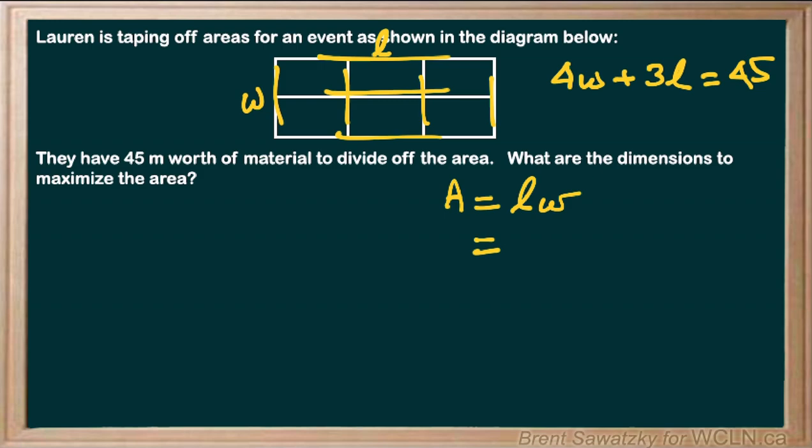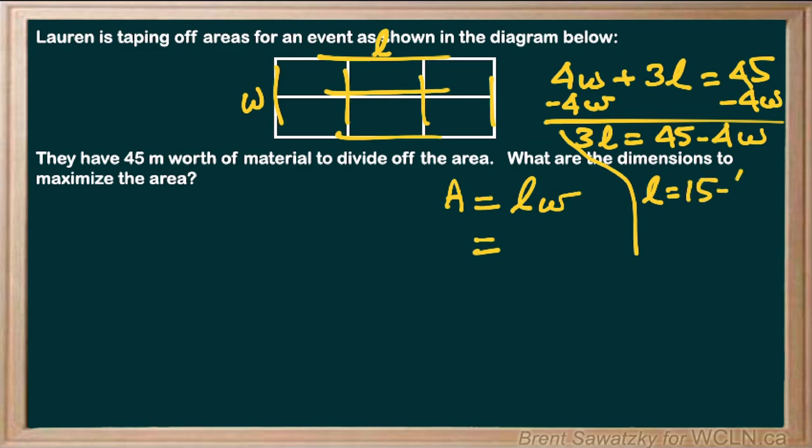We'll solve for the length and we end up with 3l equals 45 minus 4w. Divide both sides by three and we're left with length equals 15 minus four thirds w. We can go back to our area formula.